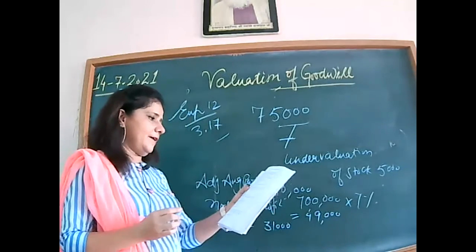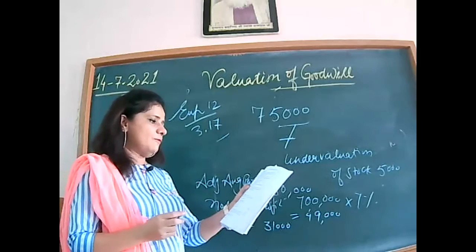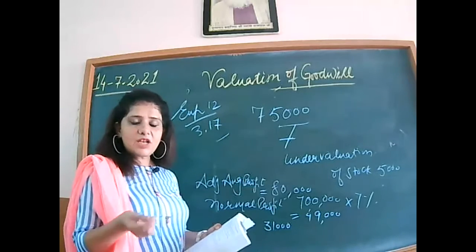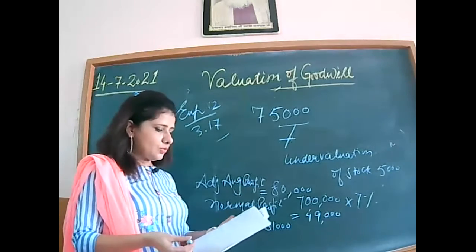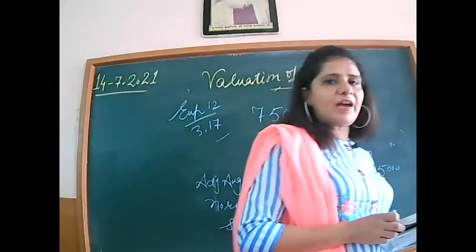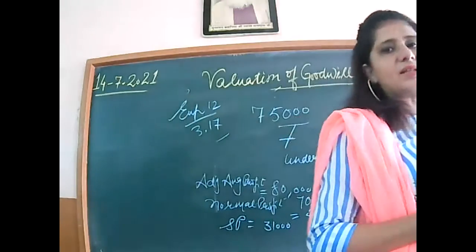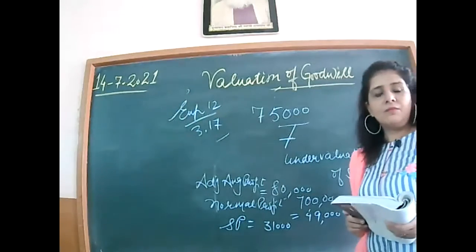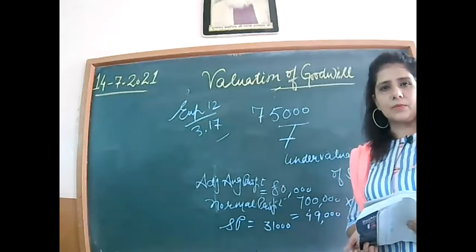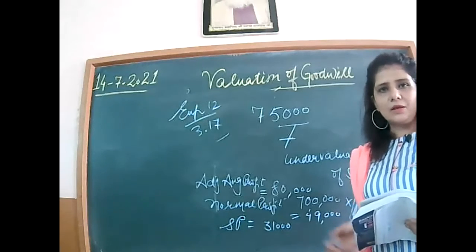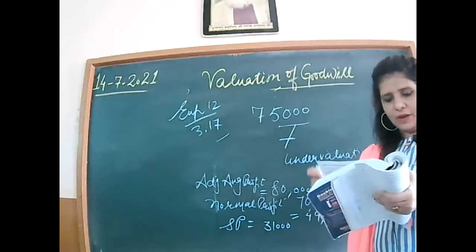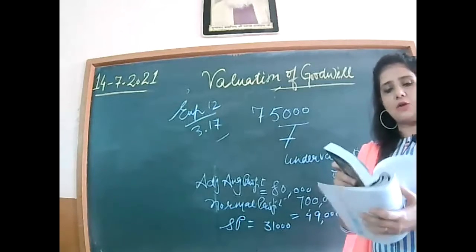Goodwill is to be calculated at five years' purchase, meaning multiply by five. So 31,000 multiplied by five gives the value of goodwill as 1 lakh 55,000, which matches the answer in your book. So undervaluation and overvaluation topics are now completed. Now we directly move to the capitalization method.